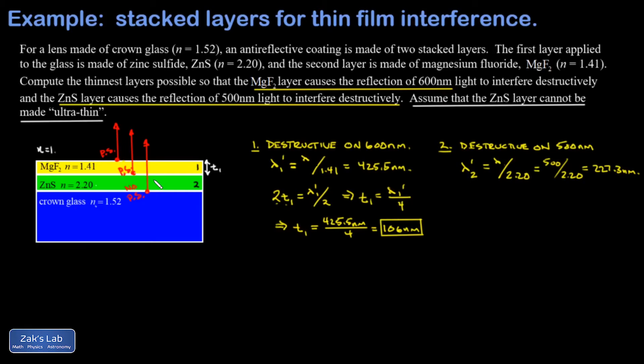So we want the next thickness that causes destructive interference on 500 nanometer light. We're going to look at the thickness of the zinc sulfide, we'll call that t2. The extra travel distance for the second reflection is two times t2. Because these two reflections are already out of phase, what we want is the right travel distance to not mess with the phase at all. The smallest way to get that done—the smallest thickness that gets it done—is if the extra travel distance is exactly one wavelength. So both reflections are going to emerge out of phase and we interfere destructively. We get t2 is lambda 2 prime over 2.